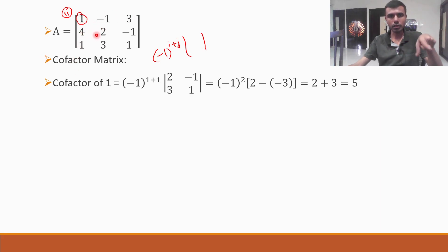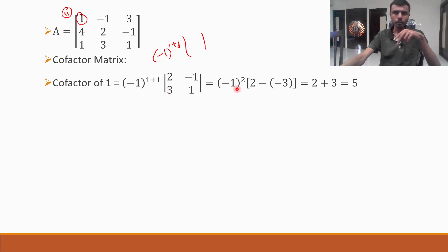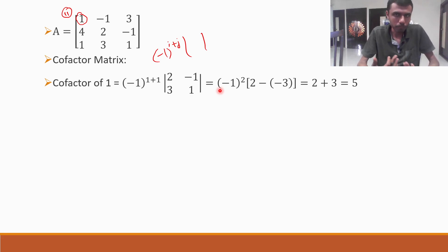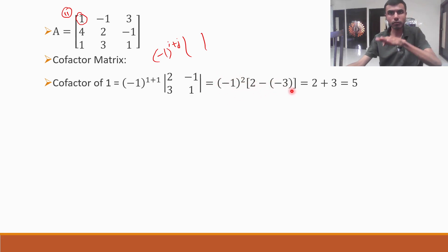Minus one to the power 1 plus 1 is minus one to the power 2, into (2 into 1 minus 3 into minus 1), which is 2 minus of minus 3. Minus one to the power even number is plus one. So the cofactor is 2 plus 3, which is 5. That is the cofactor of element 1 at position (1,1).